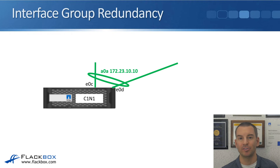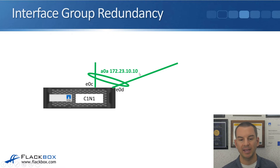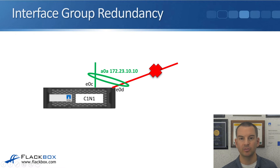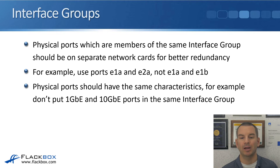Looking at how redundancy works: IP address 172.23.10.10 is on interface group A0A, which includes ports E0C and E0D. If port E0D goes down, the IP address is still available on port E0C because it is still up. The physical ports that are members of the same interface group should be on separate network cards for better redundancy.